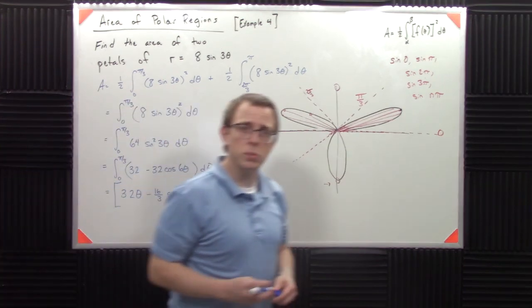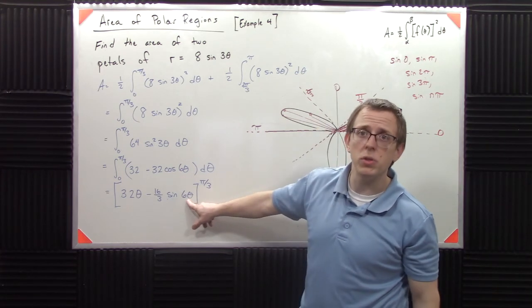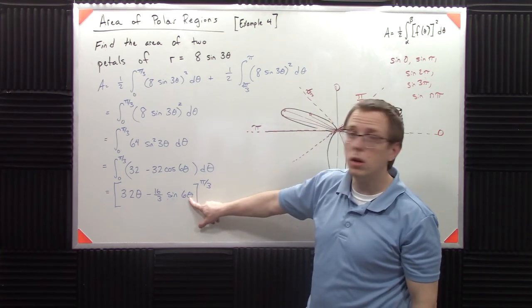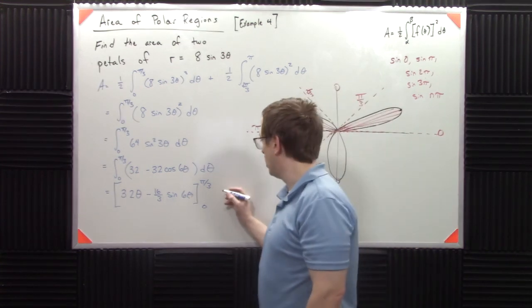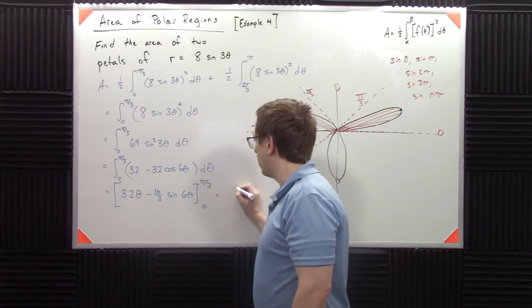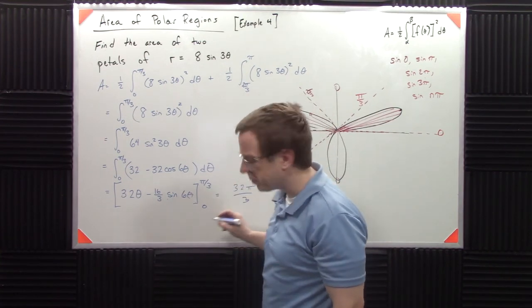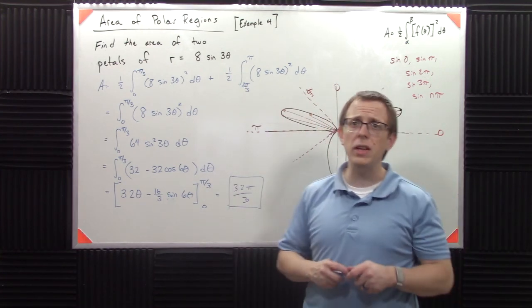So what's nice about this particular case is that when I plug in pi over three here, that becomes sine of two pi. Sine of two pi is zero. When I plug in zero here, sine of zero is zero. So the sine terms don't actually matter. So we end up with 32 pi over three. 32 pi over three. And that's really how you do it.